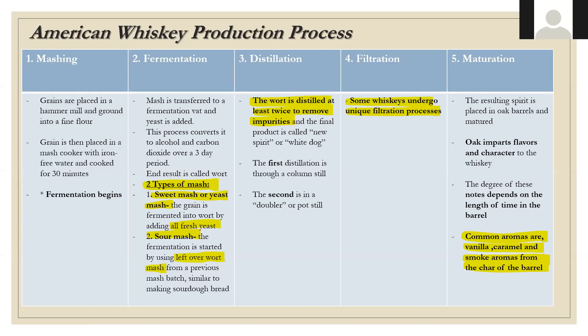There are two types of mash: sweet mash, in which grains are fermented into wort by adding all fresh yeast, and sour mash, where fermentation is started using leftover wort from a previous batch — similar to making sourdough bread. Then we go to distillation: the wort is distilled at least twice to remove impurities, and the final product is called new spirit or white dog. Some producers go straight to market with white dog.